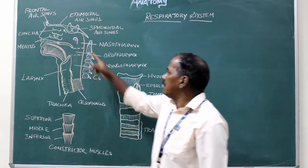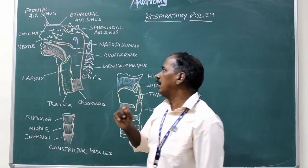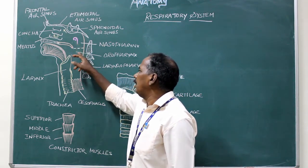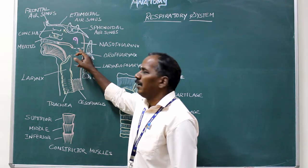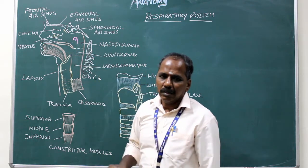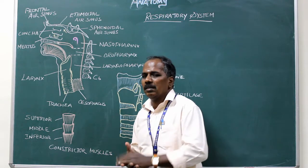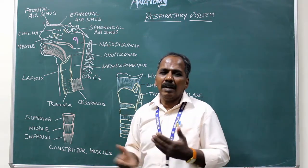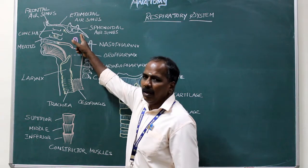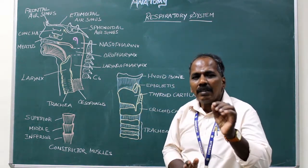Nasopharynx: It extends from the base of the skull to the lower end of the soft palate. Anteriorly, it communicates with the nasal cavity. Inferiorly, it communicates with the oropharynx through the pharyngeal isthmus. Laterally, there is an opening for the auditory tube, which connects the nasopharynx with the middle ear cavity. On the posterior superior part of the nasopharynx, there is a collection of lymphatic tissue known as the pharyngeal tonsil.